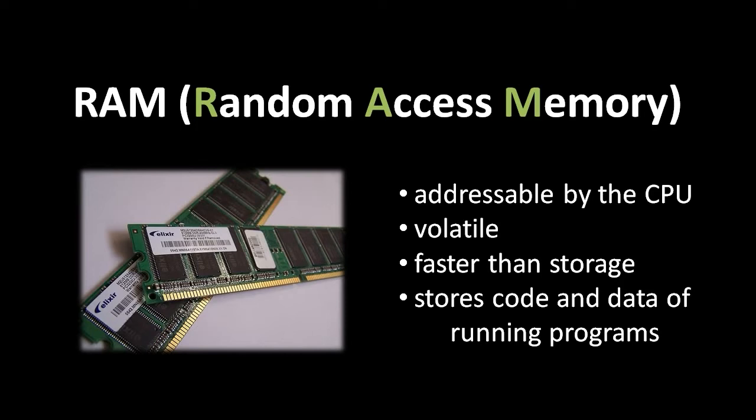Despite this annoying characteristic of volatility, we use RAM chips for system memory instead of, say, a hard drive, because RAM chips are much, much faster to read and write. As code runs, we want the CPU to access the instructions as fast as possible, so usually we copy all of a program's code into memory off of slower storage mediums like hard drives before running the program.